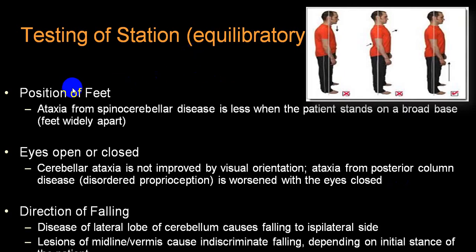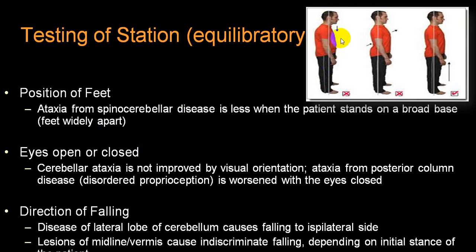Regarding position of the feet: in a case of cerebellar ataxia, the person will usually stand on a broad base — but that is a wrong technique for the test. A chin that is low is also wrong. If a person is standing with lumbar lordosis that is also wrong. The person is supposed to stand straight, with two legs together, head straight, and arms by the side — that is the best position.